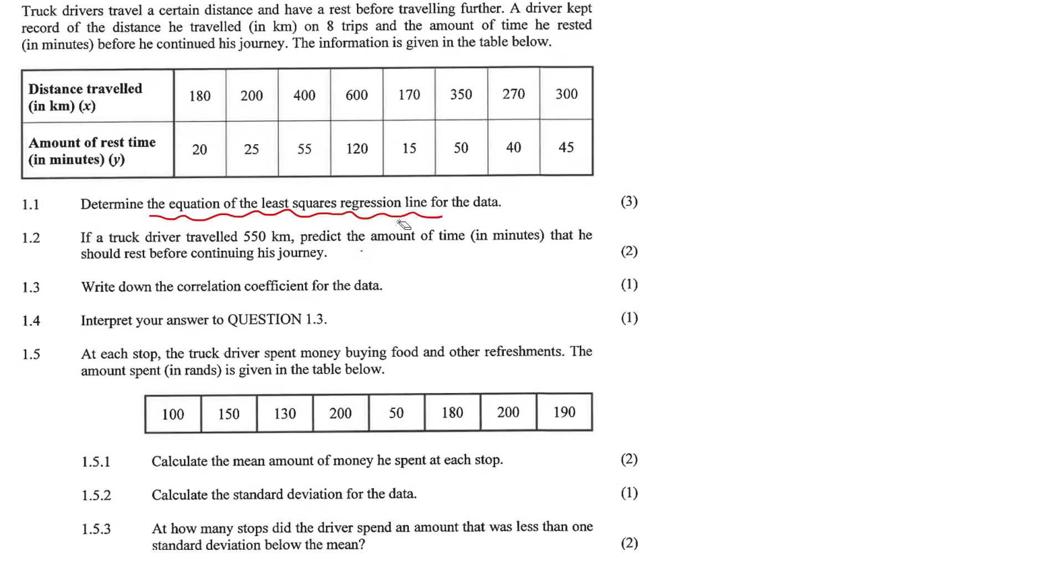Determine the equation of the least squares regression line. That is a formula on your formula sheet right at the end. You need to plug this data into your calculator and then get the A and the B value. You can also get the correlation coefficient, which is the R value, which they're asking for over here. So let's go plug all this data into our calculator now.